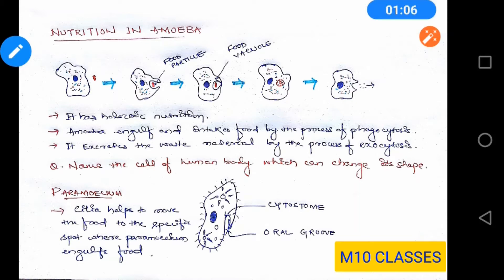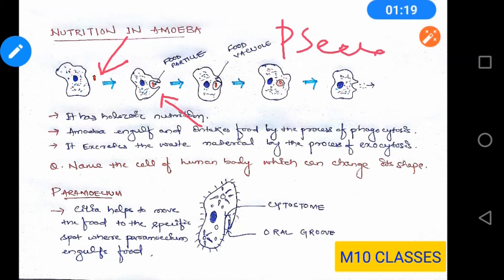As you can see in the figure, whenever a food particle comes near amoeba, it forms pseudopodia. Pseudo means false and podia means feet. So it is a false feet created by amoeba which surrounds the food particle, and gradually it forms a food vacuole. This food vacuole enters into the cytoplasm of amoeba where digestion of the food takes place.